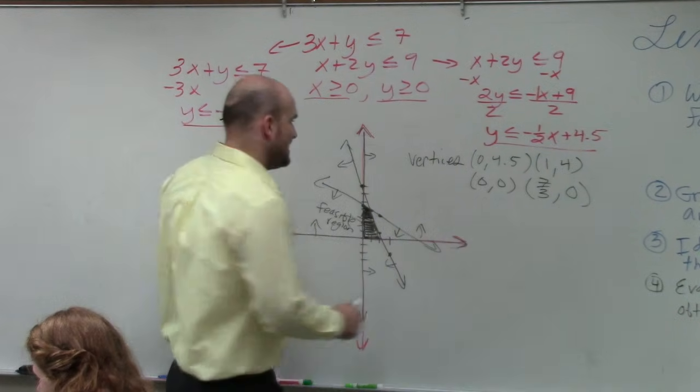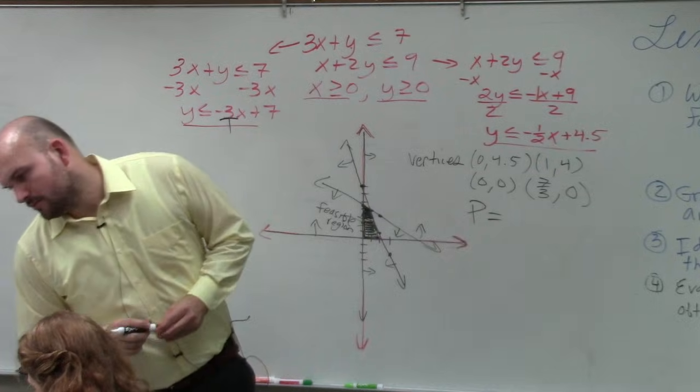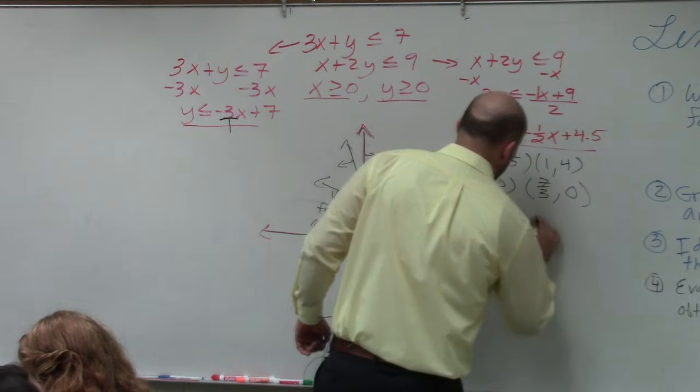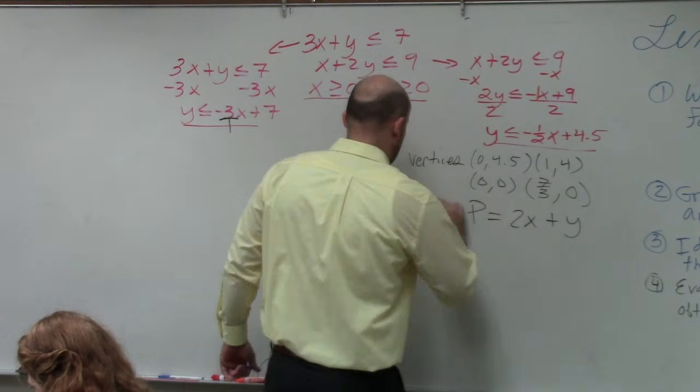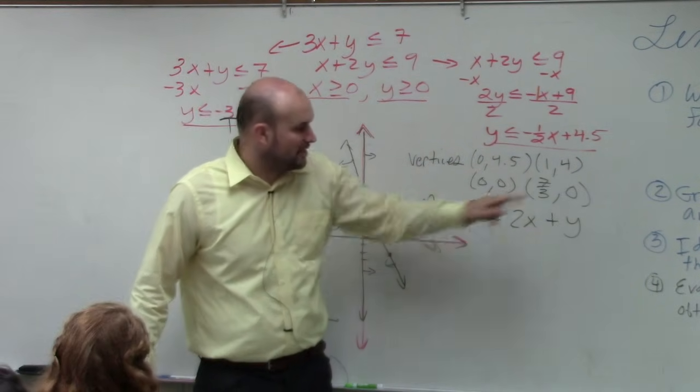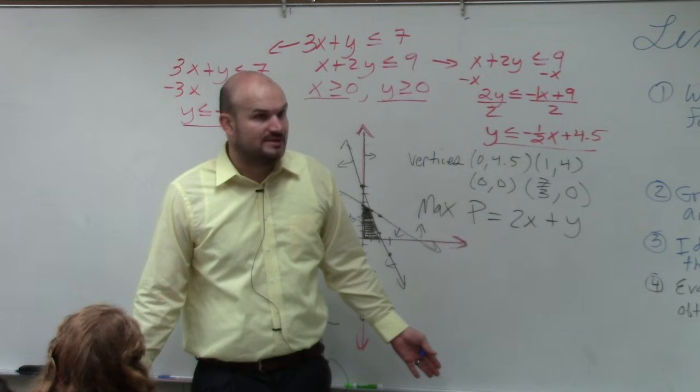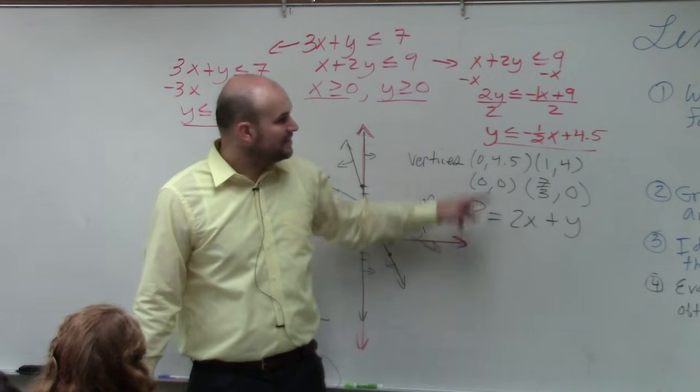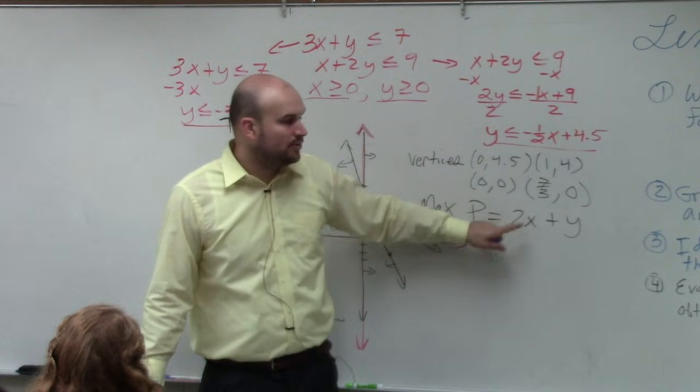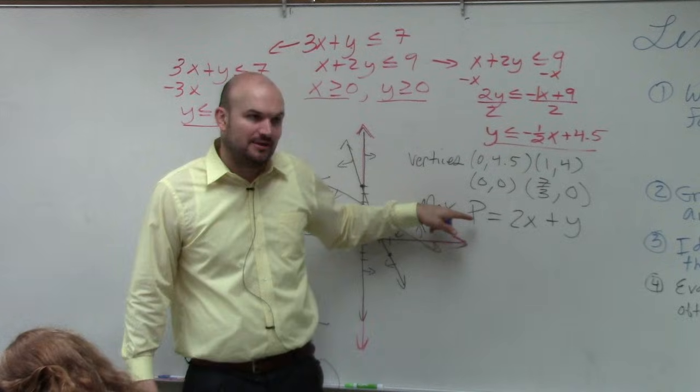And the objective function, they said, is they want you to evaluate for p, which is they want you to find the maximum of 2x plus y. They want you to find the max. So now, do you guys see how I have four coordinate points? Yes? So what you're going to do, what you're simply going to do is plug in each and every one of these points for x and y and determine which one gives you the maximum p value.